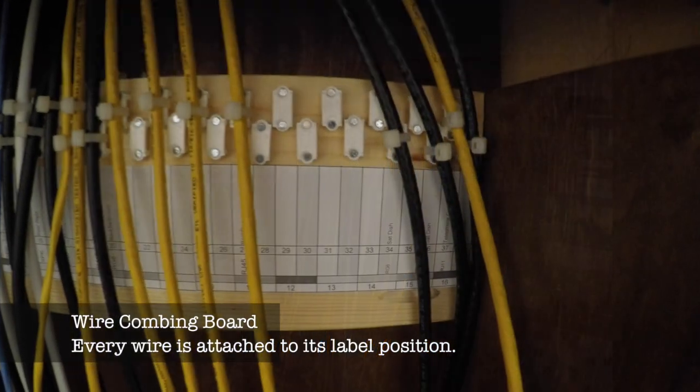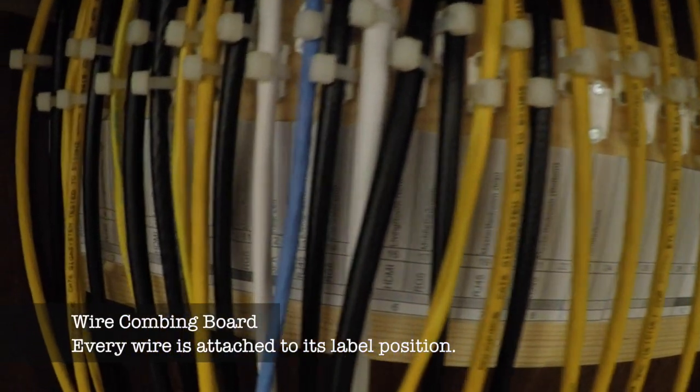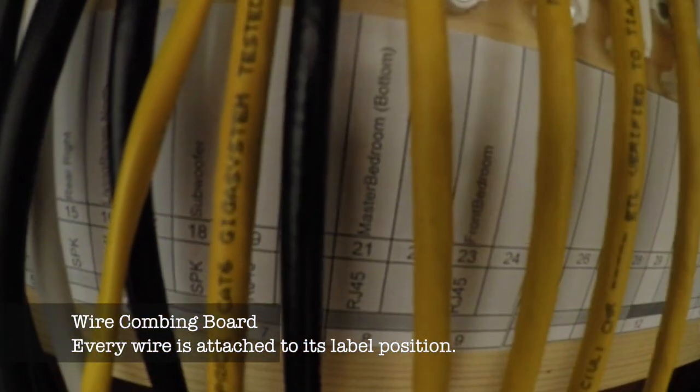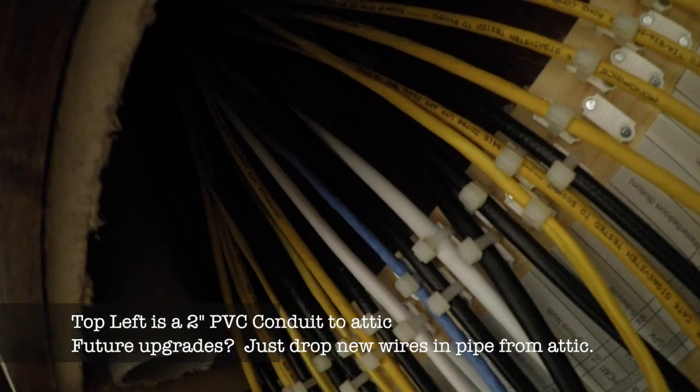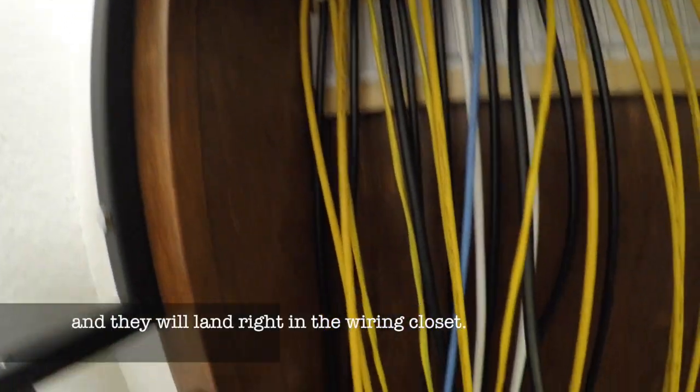Well, this is my latest wiring closet. The wiring closet is inside the electronics closet, and this is my wire combing board. It's a board with a label for every wire and a place to secure every wire with the label, that way you know where the other end of the wire goes.